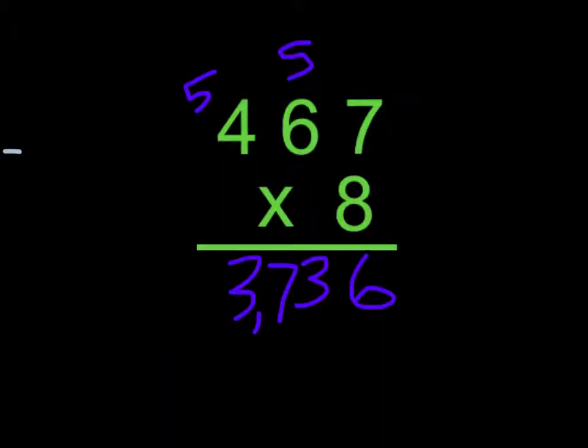Four hundred sixty-seven times eight equals three thousand seven hundred thirty-six. I multiplied seven times eight, which equals fifty-six. So I put down the six and carry the five.